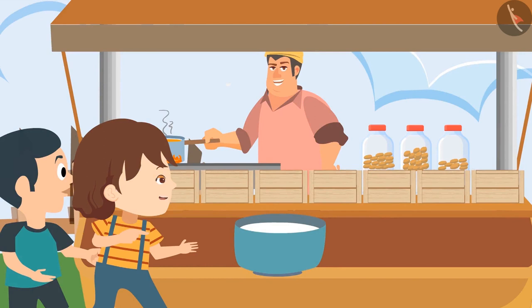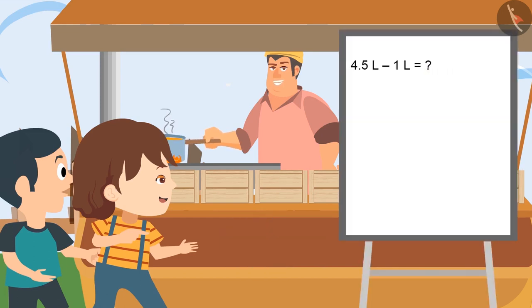Daddy, how much milk have you used for making tea? Son, I have used 1 litre of milk. Okay, now tell me — if I have used 1 litre of milk out of 4 and a half litres of milk, then how much milk is left? After taking out 1 litre, we are left with 3.5 litres of milk.